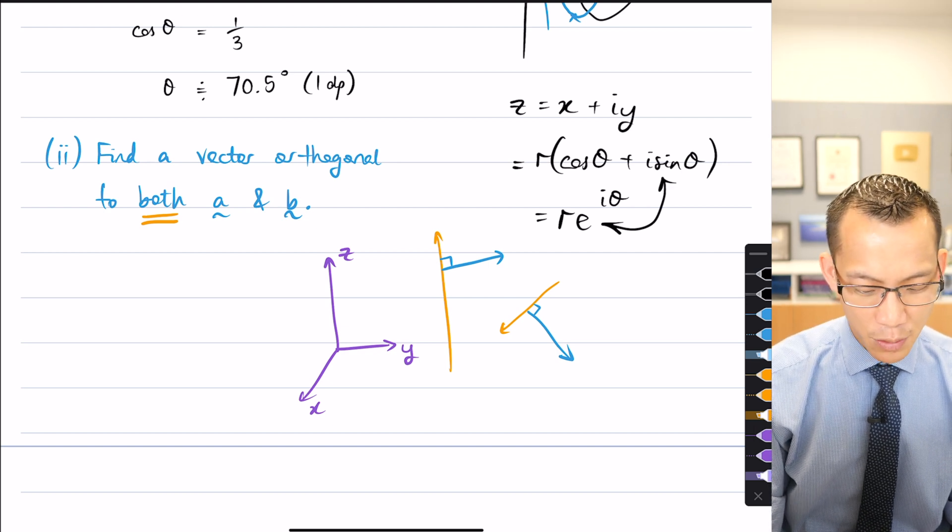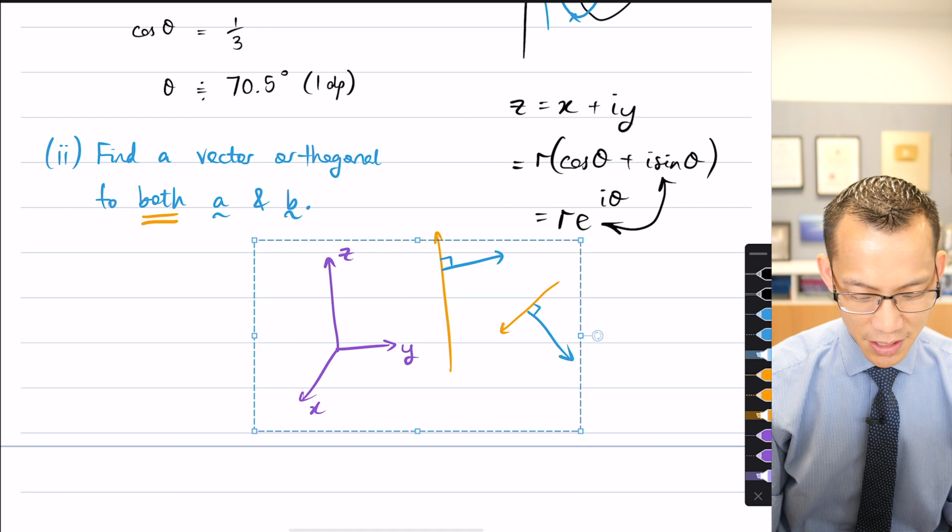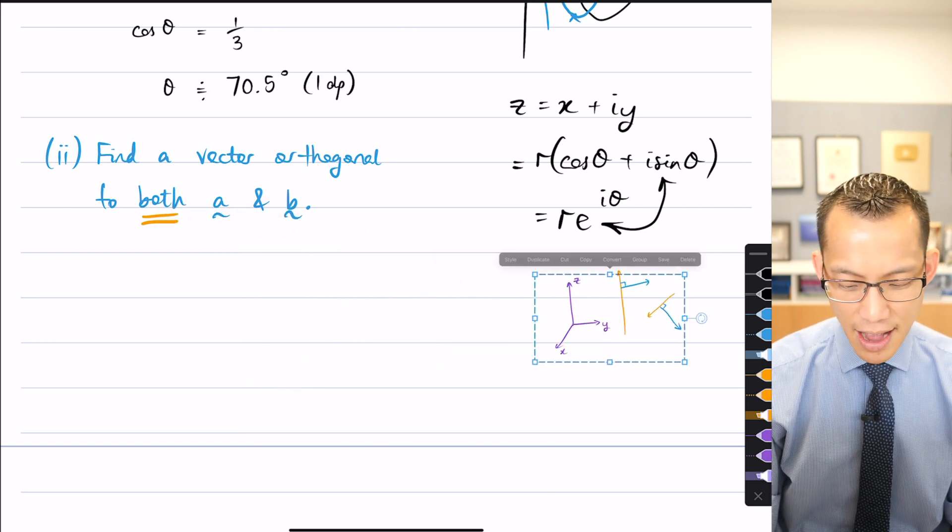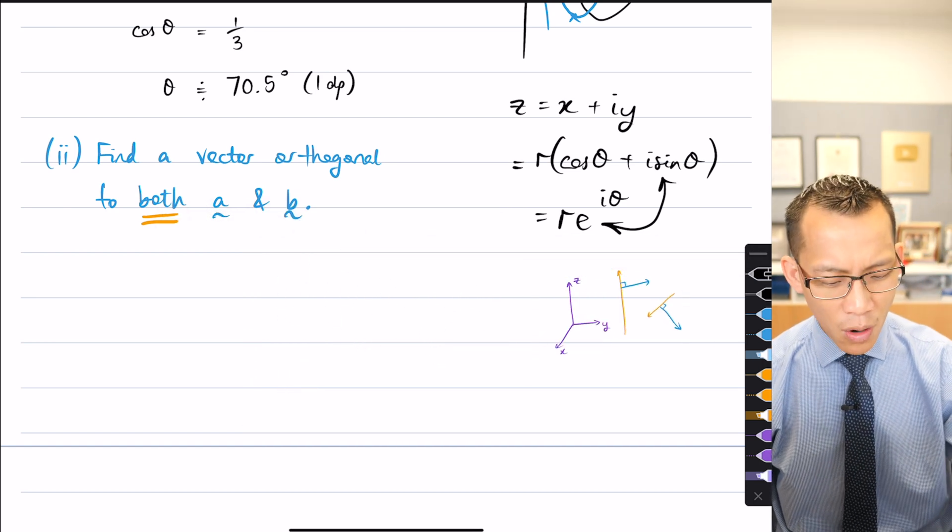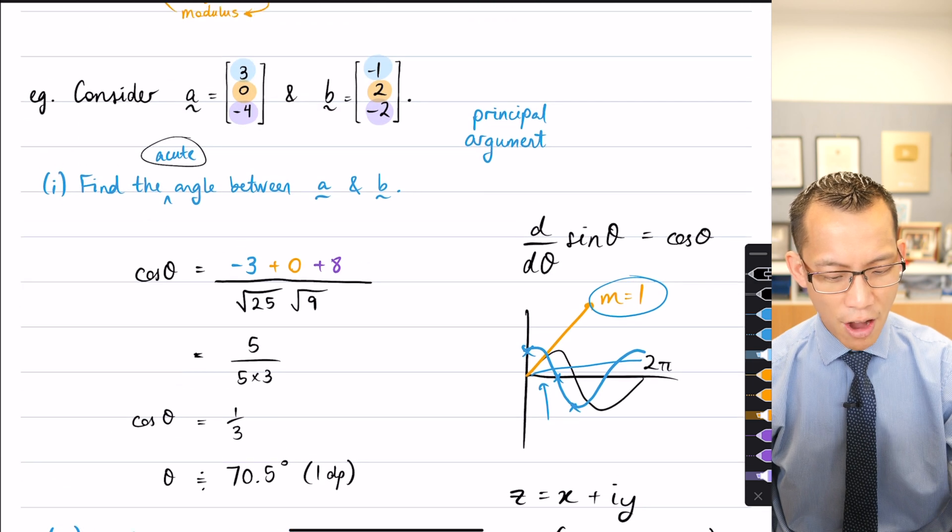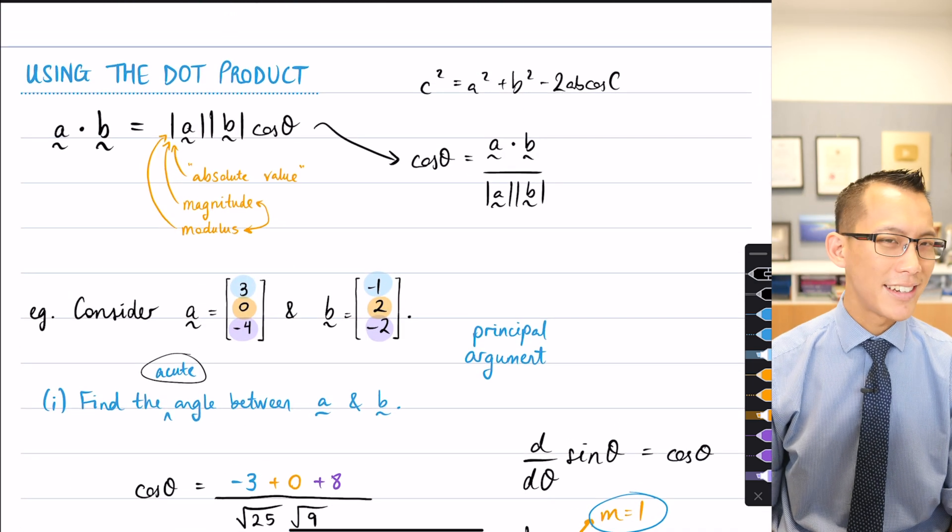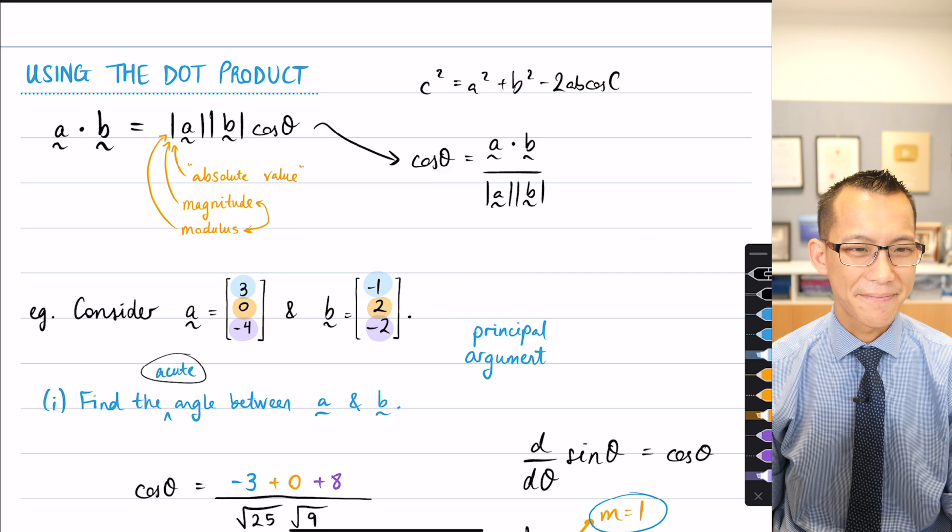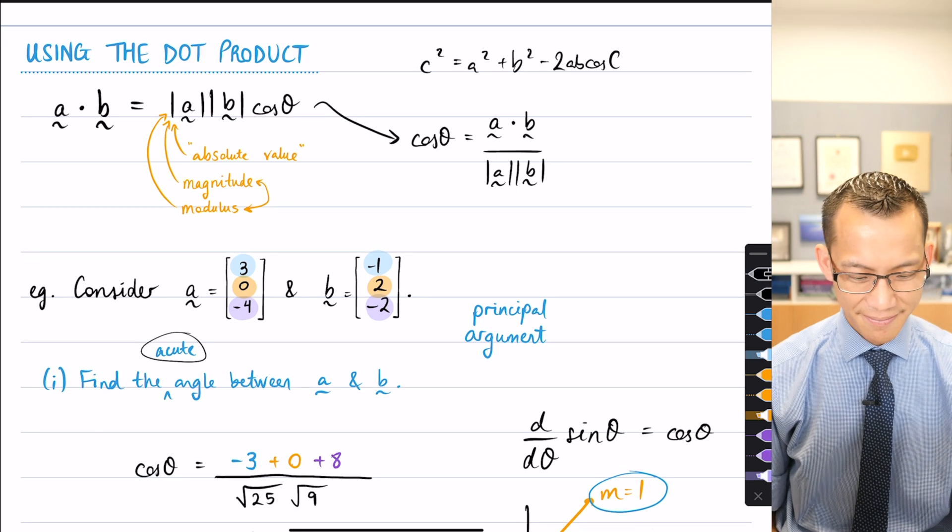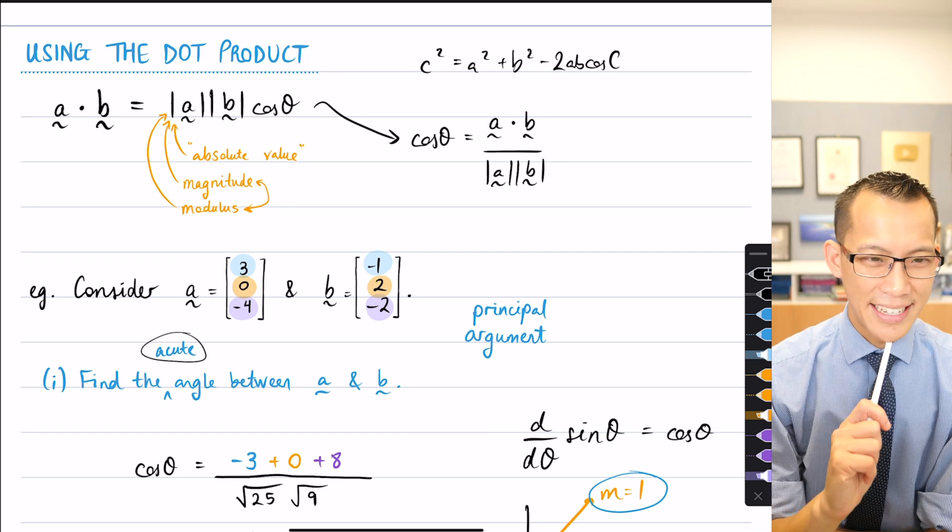So before we, now that we've sort of noted the unusualness of this question, I'll just shove this to the side. How are we going to do this? How will the dot product help us to find this vector?